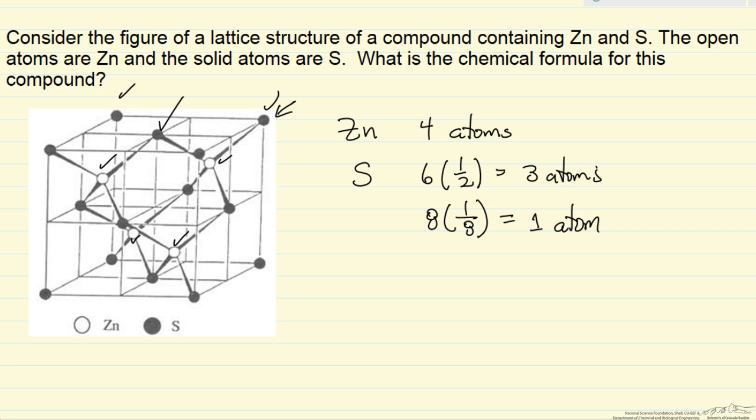And if we look at the structure, there are no other atoms. So this would say the structure must be zinc sulfide, one atom of zinc and one atom of sulfur.